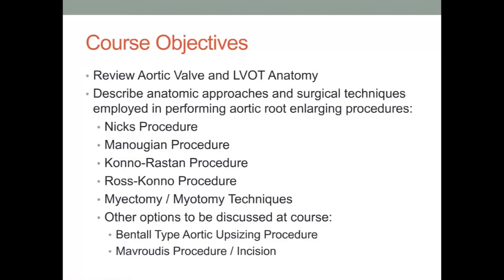This STS University course on aortic root enlargement procedures will have the following objectives. First, we will begin by reviewing aortic valve and left ventricular outflow tract anatomy. An understanding of the nomenclature employed to describe these structures and the geometry of their interaction will allow for a more focused investigation of various surgical techniques. We will focus upon posterior enlargement techniques such as the Nicks and Manouguian procedures, as well as anterior enlargement strategies including the Konno-Rastan aortoventriculoplasty and the Ross-Konno aortic valve replacement procedure.